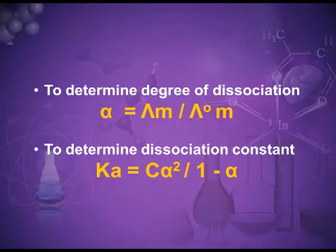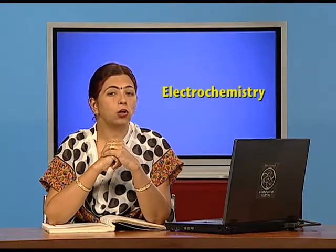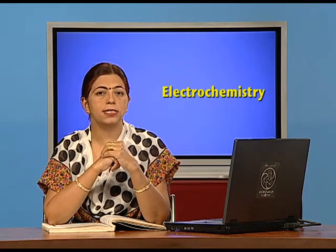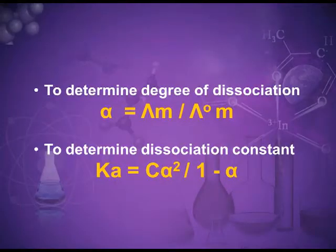Using Kohlrausch's law, we can also find the degree of dissociation, alpha, which is mathematically equal to lambda m divided by lambda m infinity. We can also find the dissociation constant k, which equals c·alpha squared divided by (1 minus alpha), where alpha is the degree of dissociation. For example, acetic acid is a weak electrolyte — it will not dissociate completely, so calculating its molar conductance experimentally is impossible.